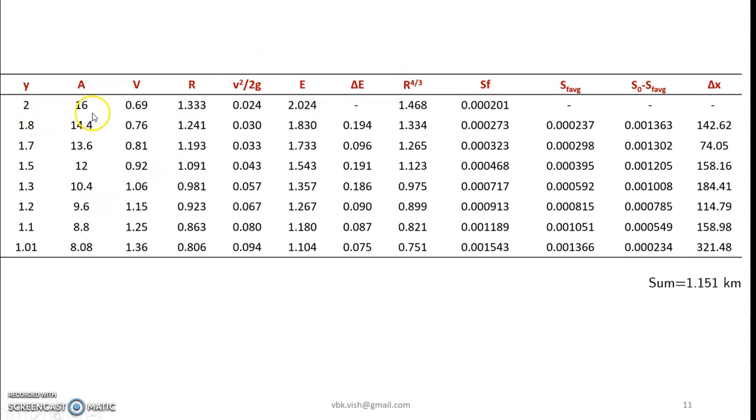So based on the values of y we calculate area. Now once we get to know about the values of area, velocity is nothing but discharge by the area of cross section or area of flow rather. R is calculated and then v squared by 2g is 0.024 now here. E is 2 plus v squared by 2g. There is no meaning for delta e for the first trial. R to the power 4 by 3 is just by raising the power of r to the extent of 4 by 3. And then Sf average has no meaning here, nor does S0 minus Sf average.